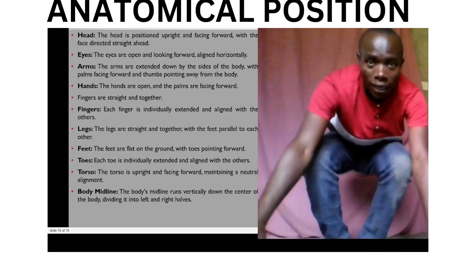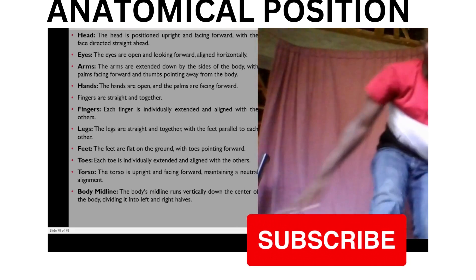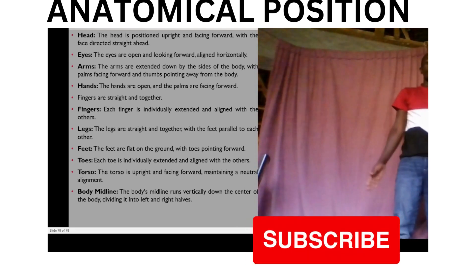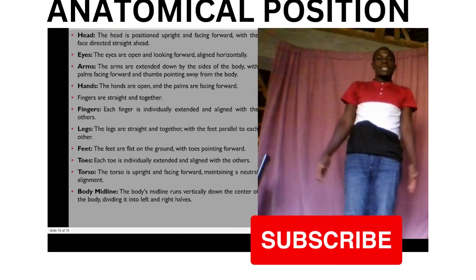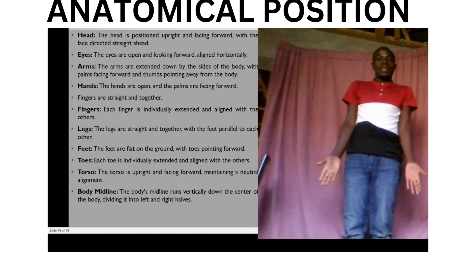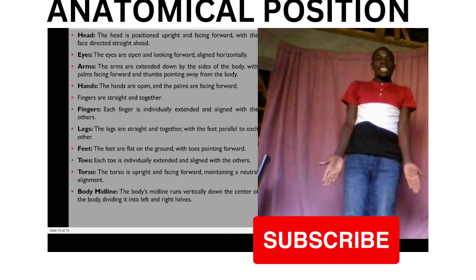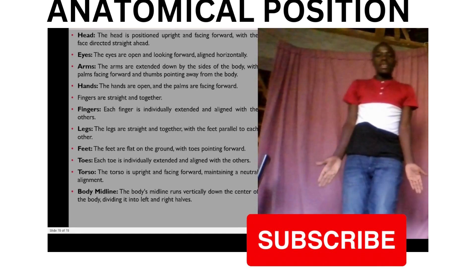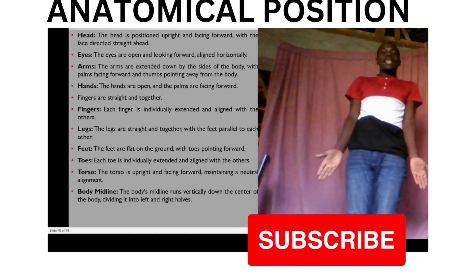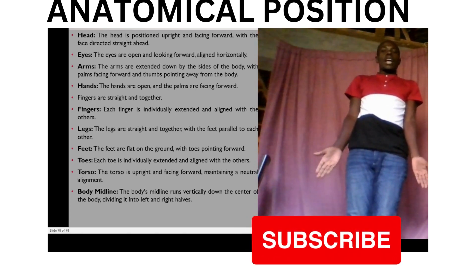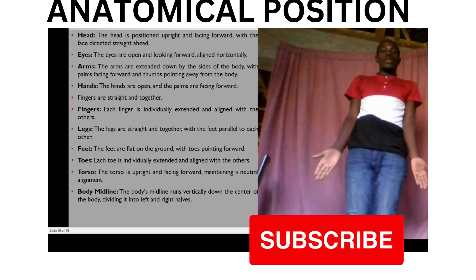So this is how we stand in anatomical position: facing forward, arms at the sides, palms facing forward, thumbs facing away from the body, fingers together, feet flat on the ground, and the toes extended.